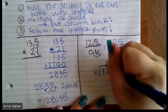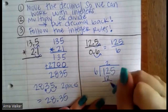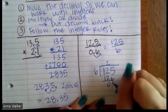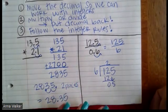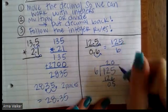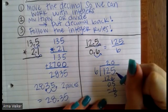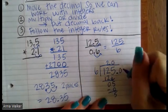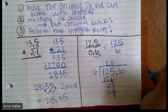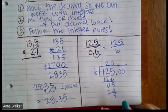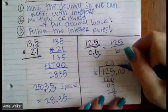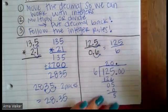Six goes into 12 twice. Six times 2 is 12, and that makes zero. If I bring down the 5, six goes into 5 zero times. Six times zero is zero. That brings my remainder down to 5. Now at this point, this is where the decimal is, right? If I put 0.000 after 125, it still is equivalent to 125. So this is where the decimal is in my answer.